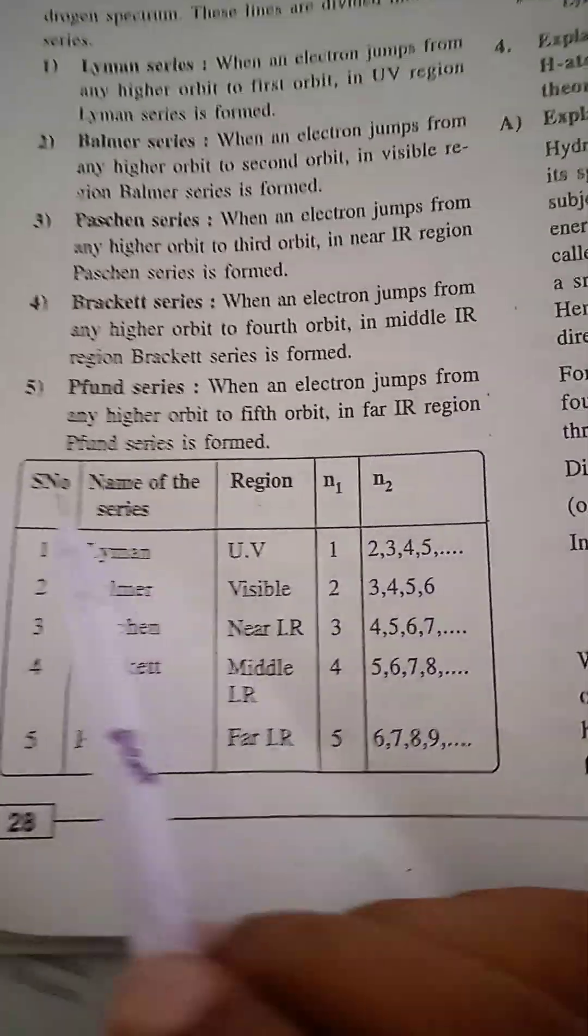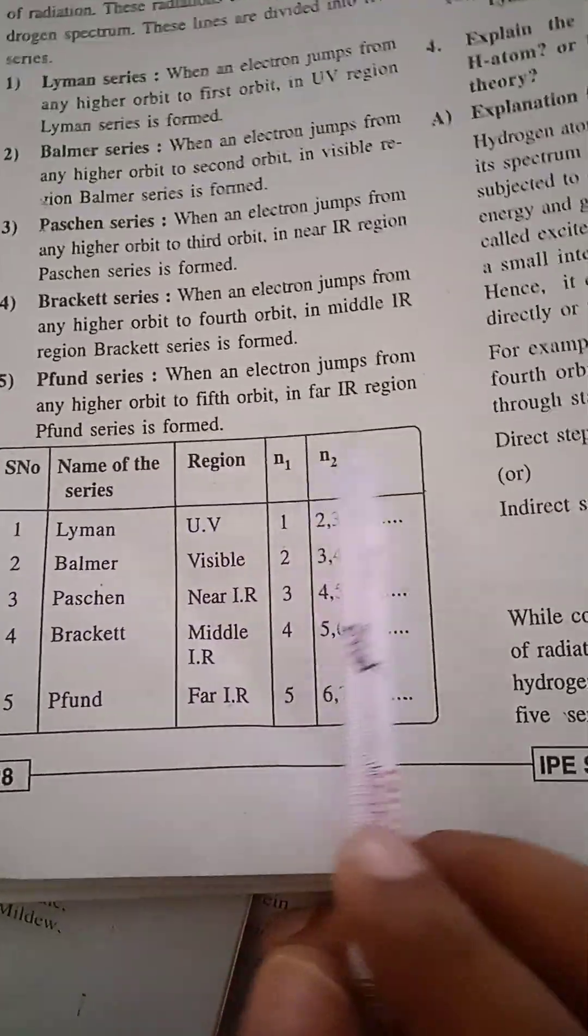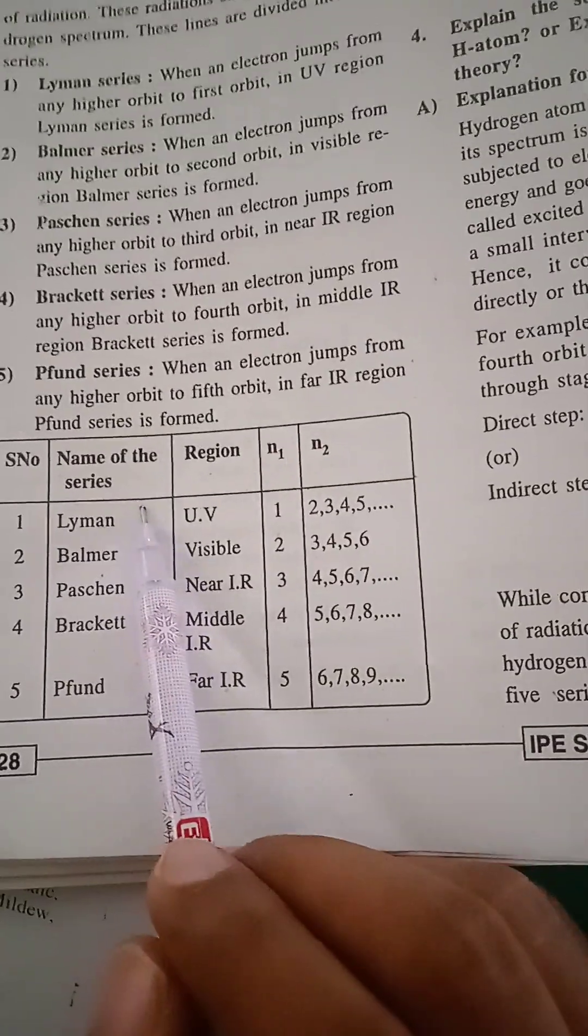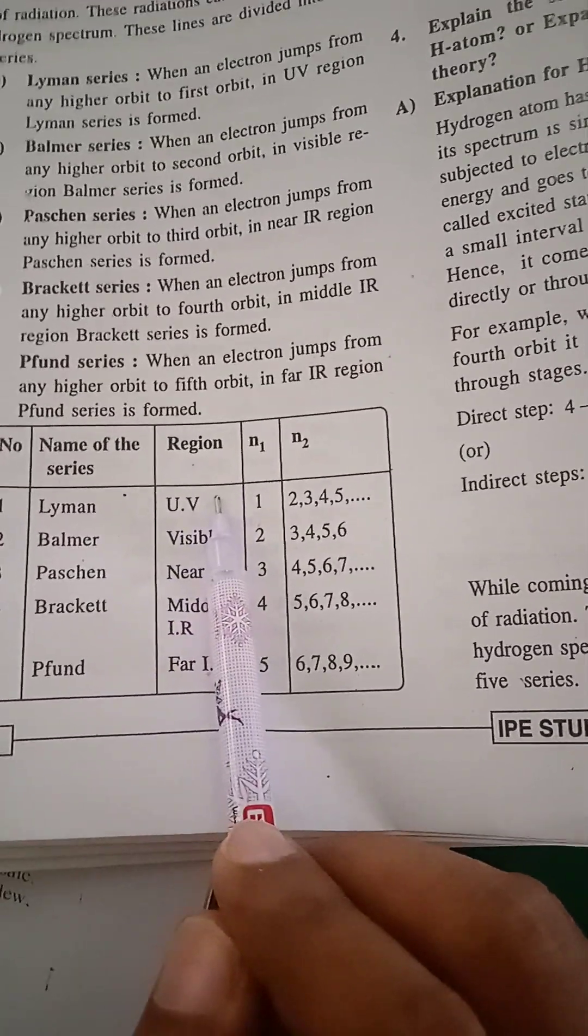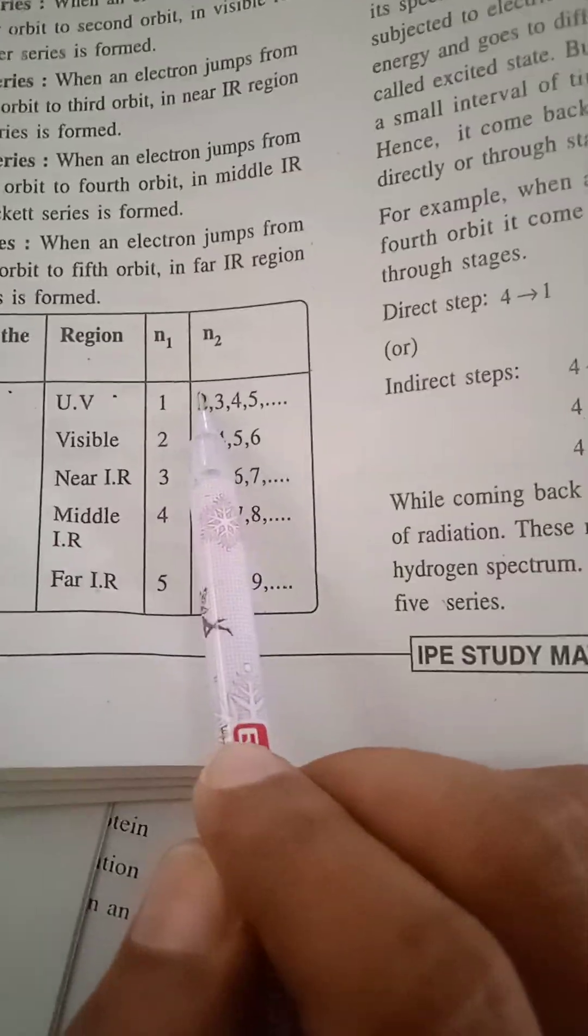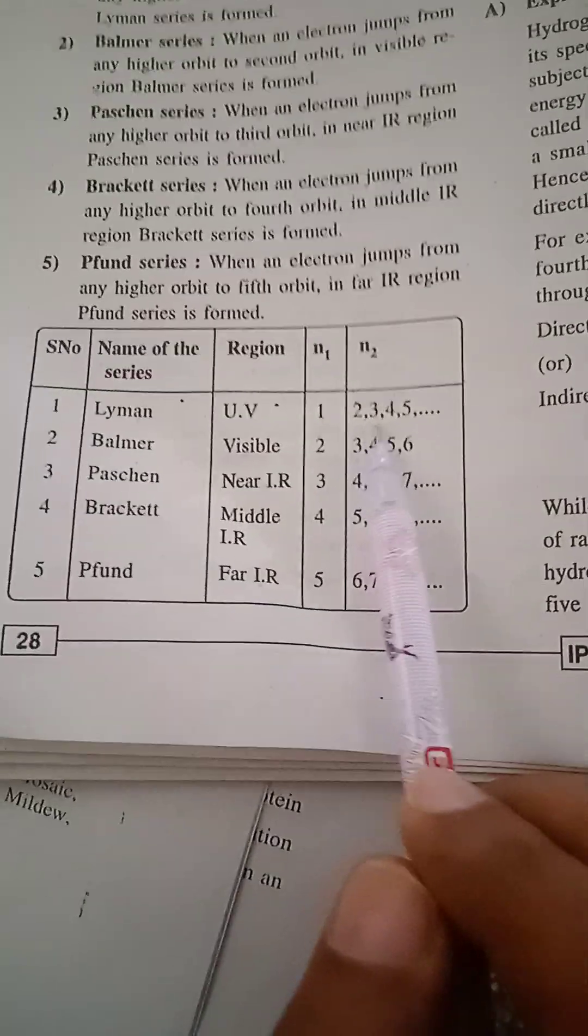This table is important. Serial number, name of the series, region, N1, N2. First, Lyman series is in the UV region, ultraviolet. N1 equals 1, N2 equals 2, 3, 4, 5.